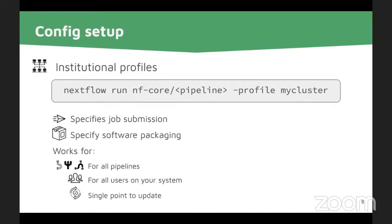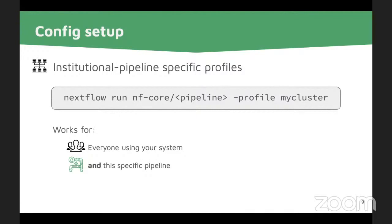Then there are institutional profiles. If you're lucky, somebody at your institute has already run nf-core pipelines and written an institutional config that you can find on GitHub in the configs repository. This specifies the job submission system. It can also specify the software packaging if you want everyone using your system to use Singularity. They work for all pipelines and all users on your system, and you only have a single point to update. So if you set them up, you can run all the pipelines without worrying about this anymore. Some pipelines also need special institutional pipeline-specific settings, so you can specify those too.